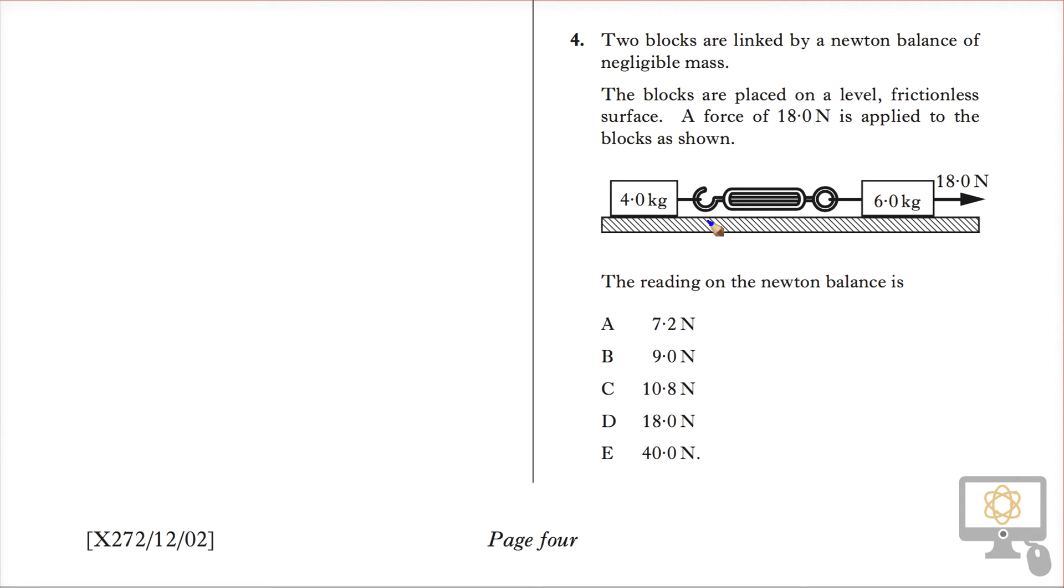So what we're looking at here is effectively the force required to pull the 4 kilogram mass. The first way to look at this problem is to determine what is the acceleration on the entire system of the 6 kilogram and the 4 kilogram, and the Newton balance of negligible mass. To do that, we're going to use Newton's second law, F equals Ma.